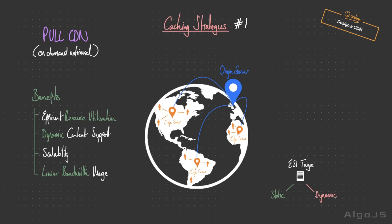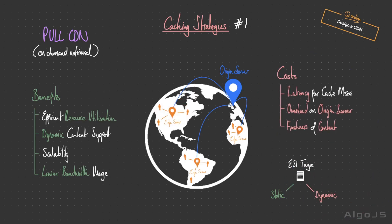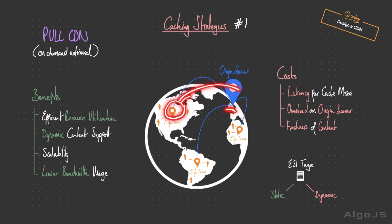However, there are trade-offs to consider. Any content not already cached in the proxy servers will result in increased latency since it needs to be fetched from the origin server first. There is also potential overhead on the origin server — if all users request new information, all requests go to the origin, which could be significant during high peak times. Finally, cached content might not always reflect the most up-to-date version, especially if content changes frequently on the origin server.